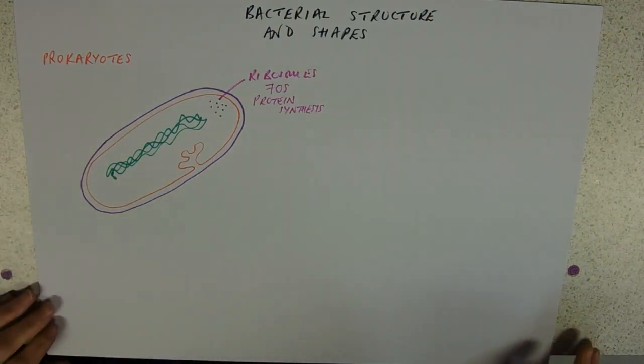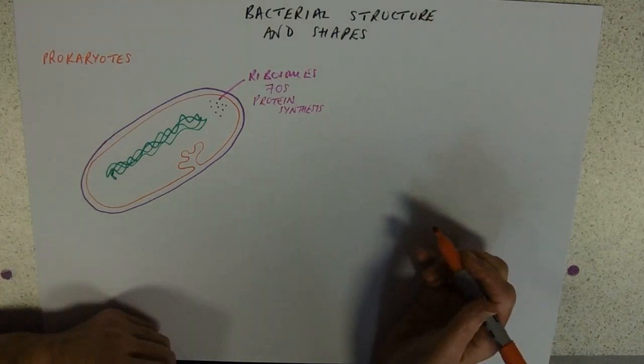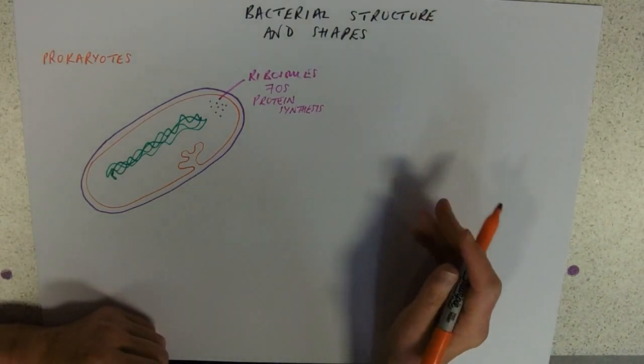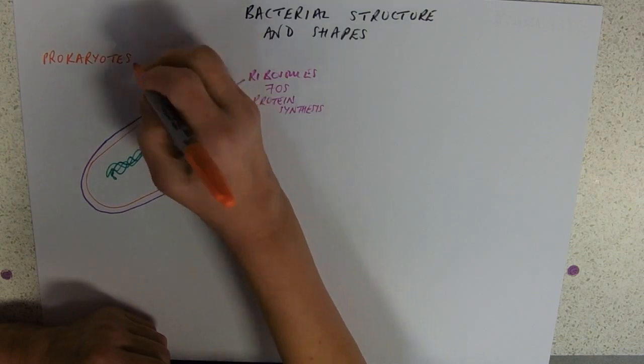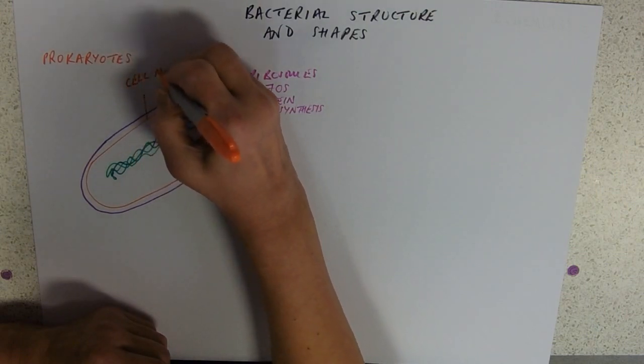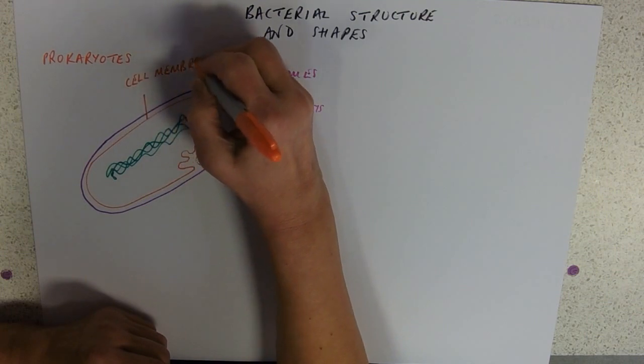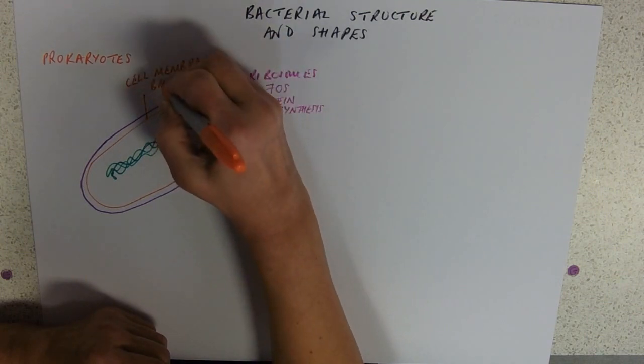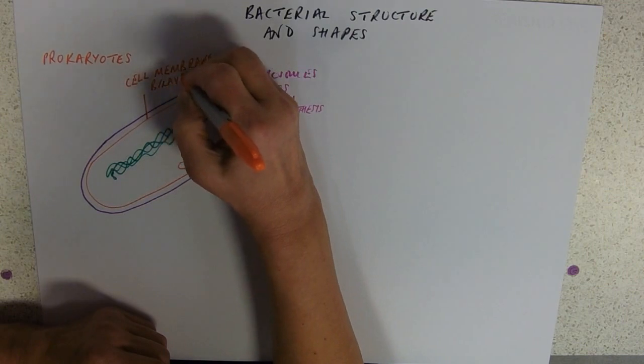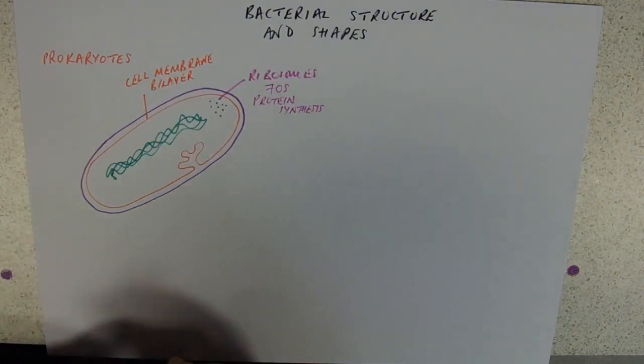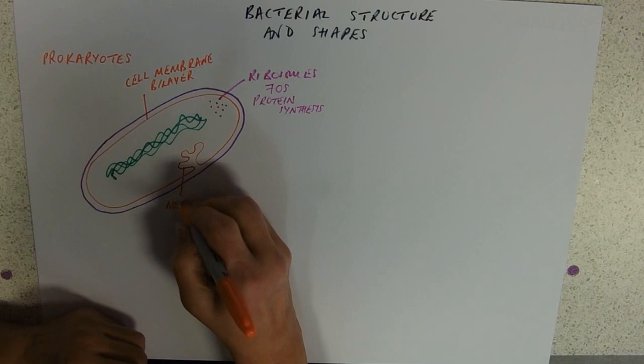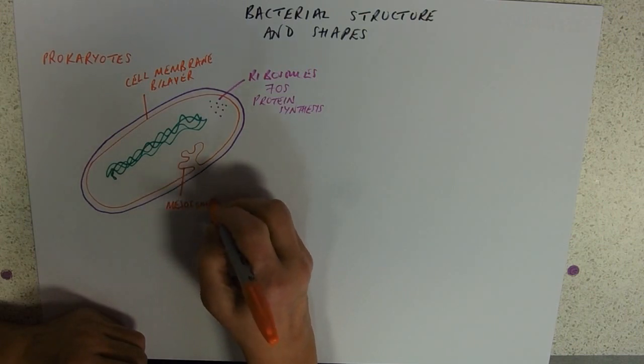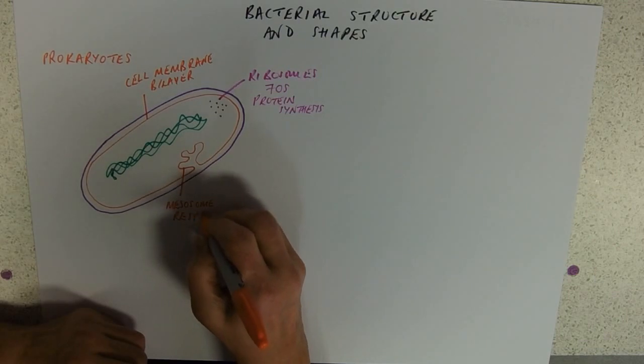And that includes all members of the kingdom prokaryote and the, sorry, the domain eubacteria and the archaeobacteria. So, this is the cell membrane. And it's a bilayer phospholipid. So, it's got exactly the same membrane structure that our cells have. It does the same function. And we've got the mesosome, which does respiration.